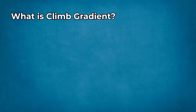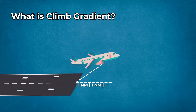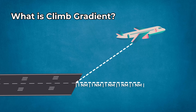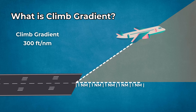What is climb gradient? Climb gradient represents the vertical distance climbed per unit of horizontal distance over the ground. It's commonly expressed as feet per nautical mile or as a percentage slope. It describes the geometric slope of the climb path, not the time-based climb rate. For instance, if an aircraft climbs 300 feet for every nautical mile, that's a climb gradient of 300 feet per nautical mile.